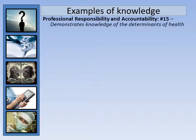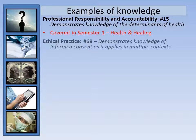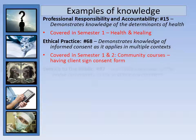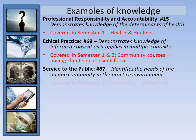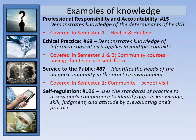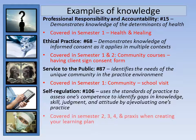Examples of competencies and where you may have learned them: Number 15, Professional Responsibility and Accountability — demonstrates knowledge of the determinants of health — was covered in Semester 1 Health and Healing. Number 68, Ethical Practice — demonstrates knowledge of informed consent as it applies in multiple contexts — was covered in Semesters 1 and 2 in your community courses. Number 87, Service to the Public — identifies the needs of the unique community in the practice environment — was covered in Semester 1 Community during your school visit. Number 106, Self-Regulation — uses the standards of practice to assess one's competence to identify gaps in knowledge, skill, judgement and attitude.